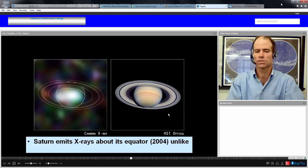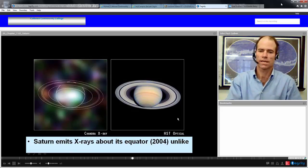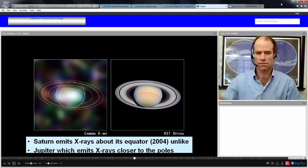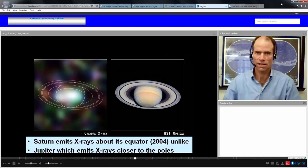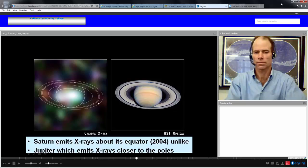Here's a picture taken by the Chandra X-ray Telescope showing that Saturn is actually emitting X-rays about its equator. This picture taken in 2004. This is unlike Jupiter, which emits X-rays at its poles. The reason for this is still unknown. It's probably due somehow to the way that the metallic hydrogen is spinning, but it's still not known why there's a difference between Saturn and Jupiter.